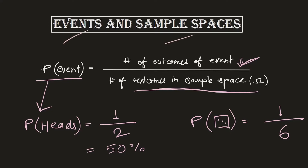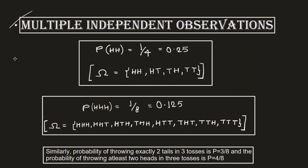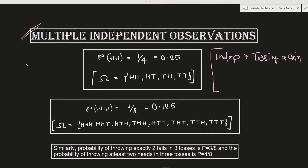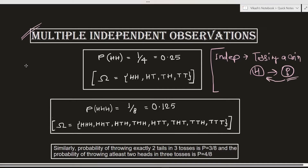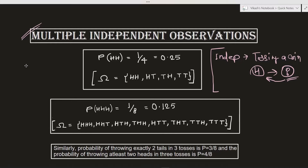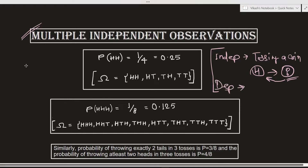Let's explore the idea of multiple independent observations. First, let me give a basic explanation of independent and dependent observations. An example of an independent observation is tossing a coin. If in the first toss you get heads, then in the second toss the outcome will not be impacted by the first toss — meaning in the second toss there will still be 50/50 chances of achieving heads or tails. This is a perfect example of an independent observation.